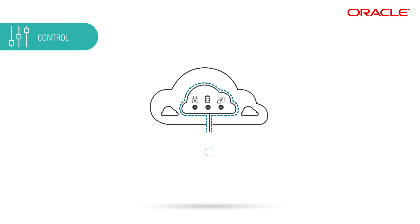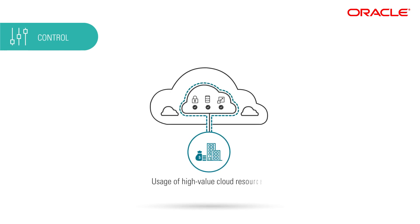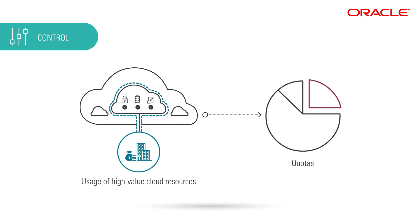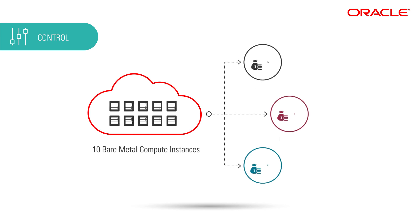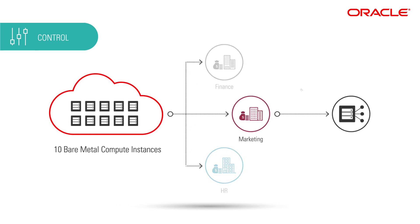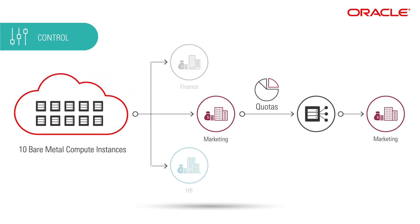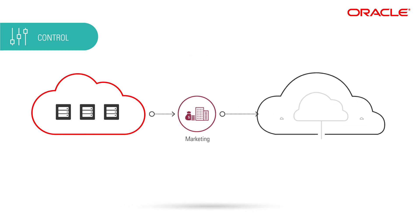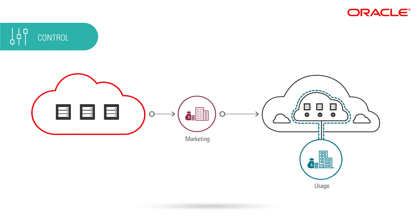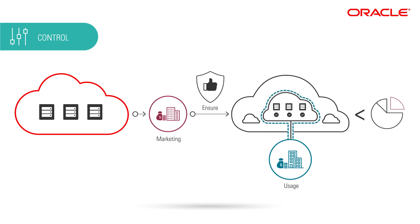Janet can also centrally control usage of the company's high-value cloud resources through the use of quotas. Her company purchased 10 bare-metal compute instances that are shared across all departments, and the marketing apps team is given a quota of three of those resources. Through the use of quotas, Janet can maintain control over usage and ensure that no single department exceeds their quotas.